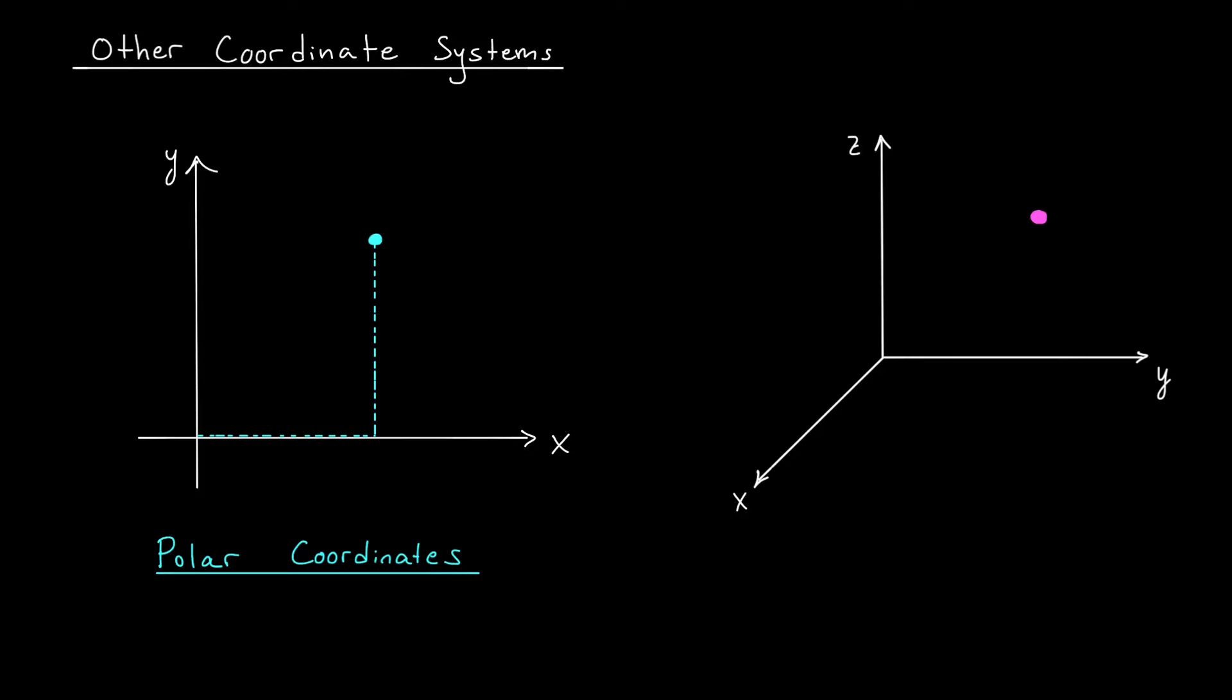you can represent this point using quantities R and Theta. Here R denotes the point's distance to the origin, and Theta denotes the angle the point makes with the positive X-axis.